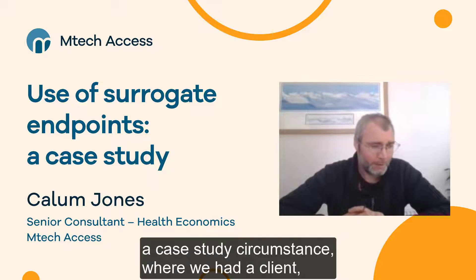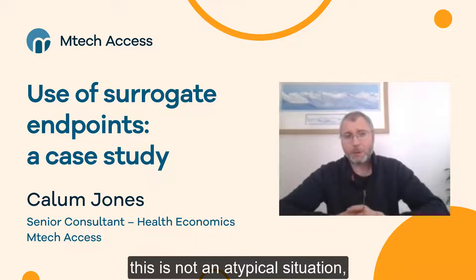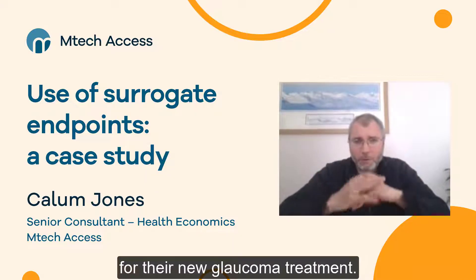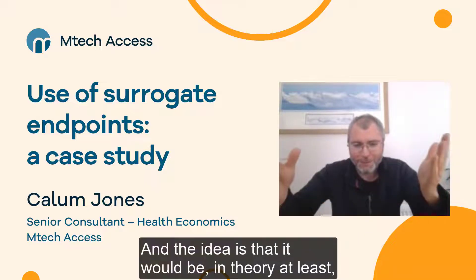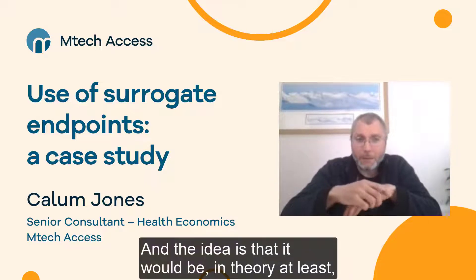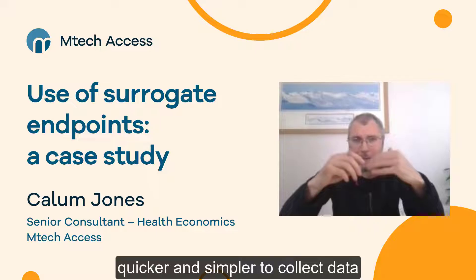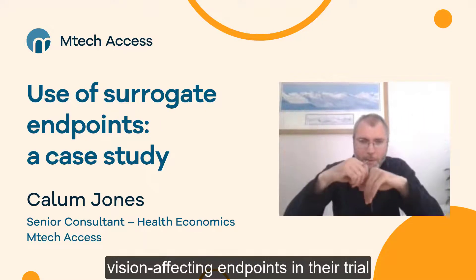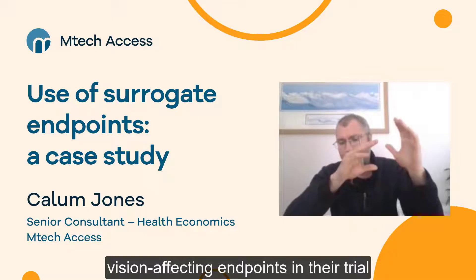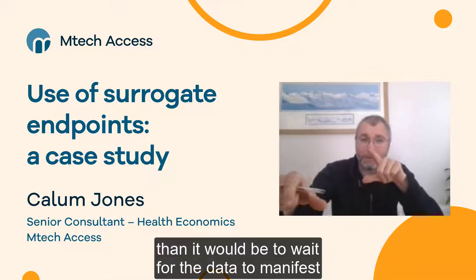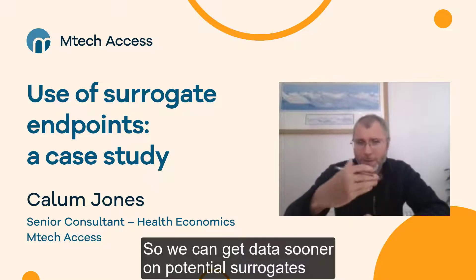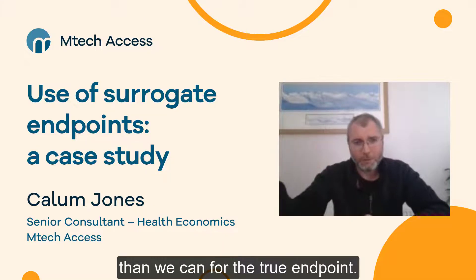This is a case study circumstance where we had a client — not an atypical situation — where they were looking to speed up the approval process for their new glaucoma treatment. The idea is that it would be, in theory at least, quicker and simpler to collect data on surrogates for the true vision-affecting endpoint in their trial than to wait for the data to manifest for that true endpoint. So we can get data sooner on potential surrogates than we can for the true endpoint.